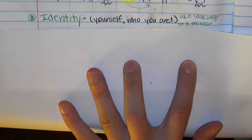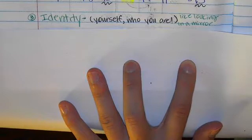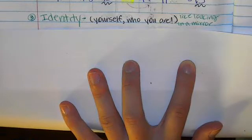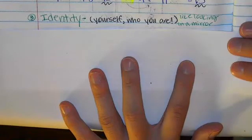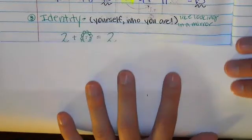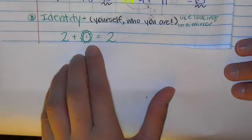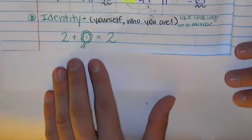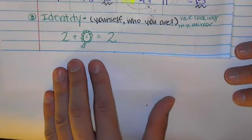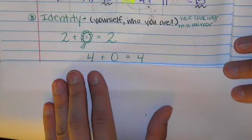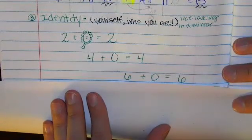And lastly there is the identity property, like your identity, who you are. You are you. The identity property, just like the number is that number. It's like looking into the mirror. We refer the zero as a mirror. It's looking into the mirror. So 2 plus 0 and you can see it's like a mirror. There's that little reflection of itself in the mirror. 2 plus 0 equals 2. Just like 4 plus 0 equals 4 and 6 plus 0 equals 6.